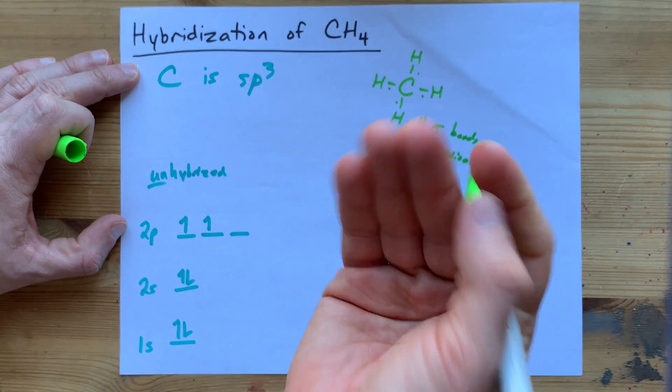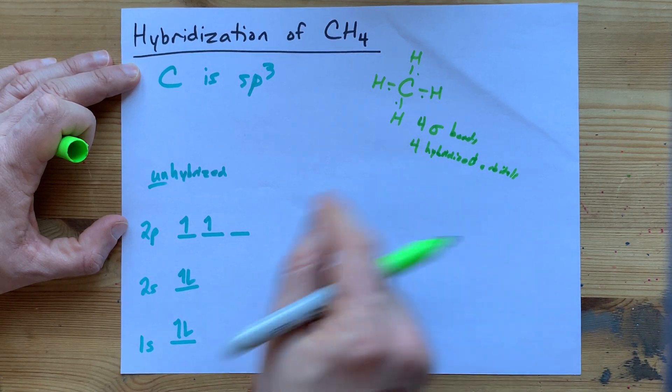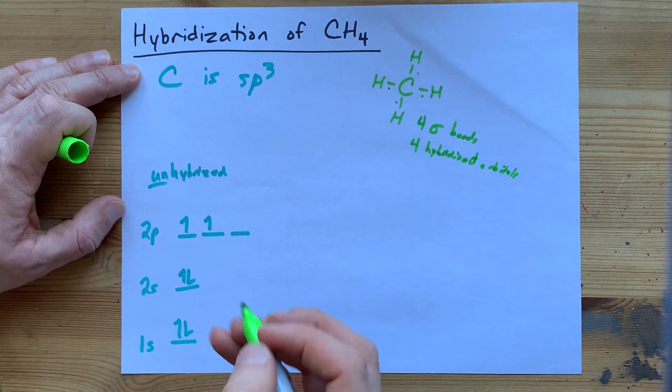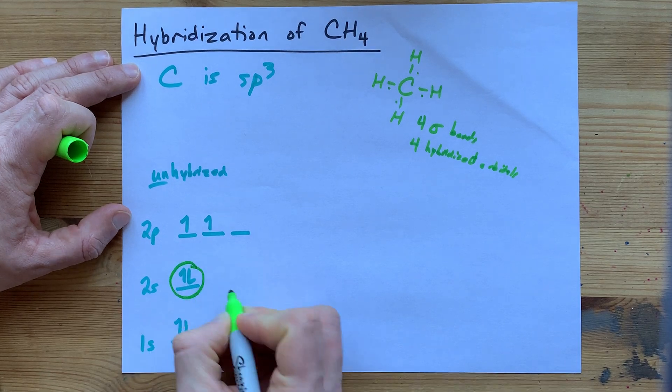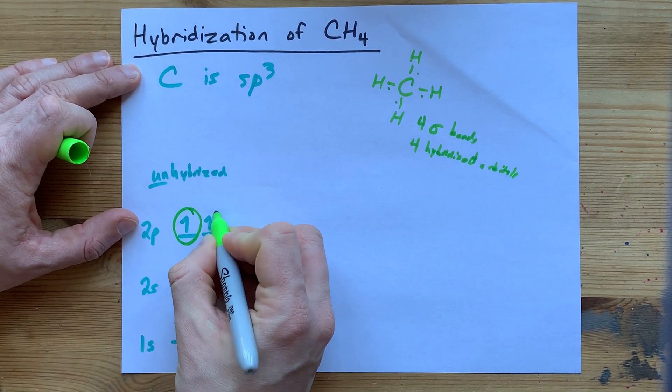How can you even get four hybrid orbitals out of this? The answer is, combine the S with three of the Ps.